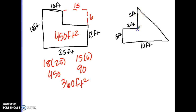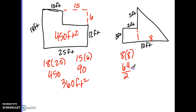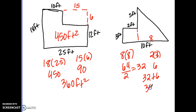For the last one, I cut into a triangle and a small rectangle. The whole bottom is 10 and this part is 2, so the triangle's base is 8. The height is 5 plus 3, which is 8. Eight times 8 is 64, and dividing by 2 for the triangle gives 32. The small rectangle is 2 by 3, which is 6. Adding 32 plus 6 gives 38 square feet.